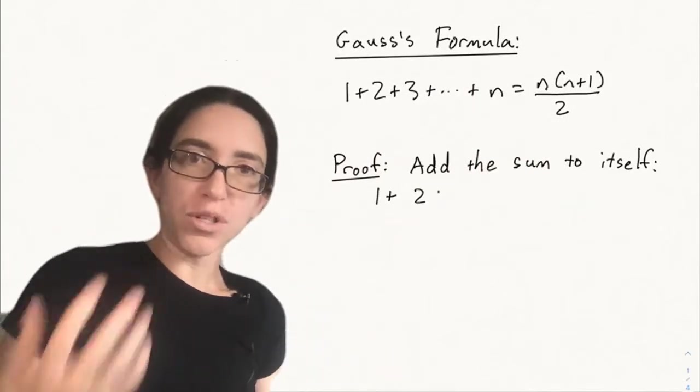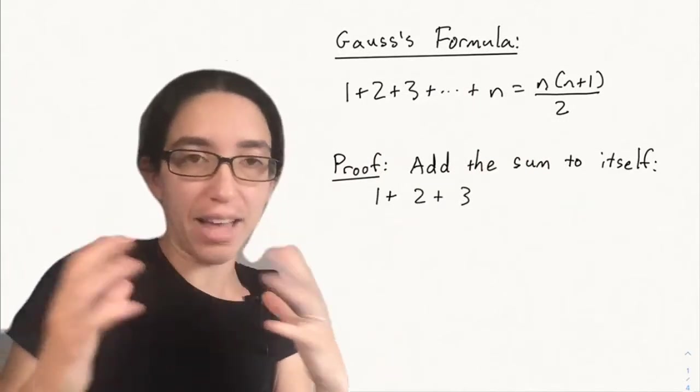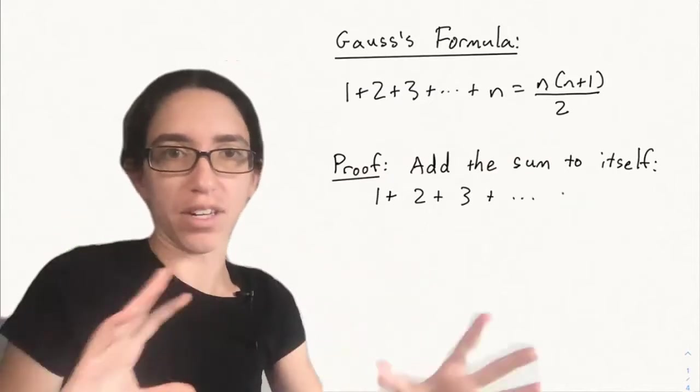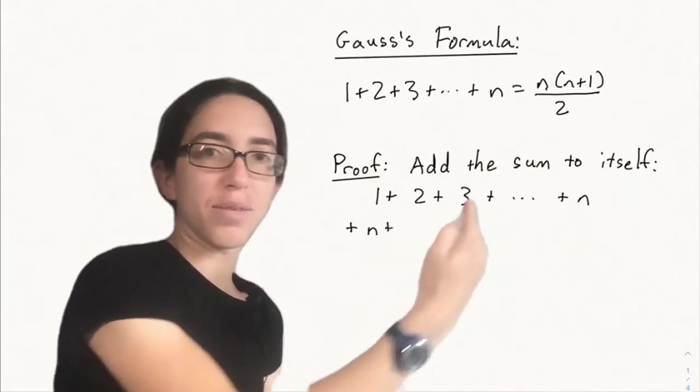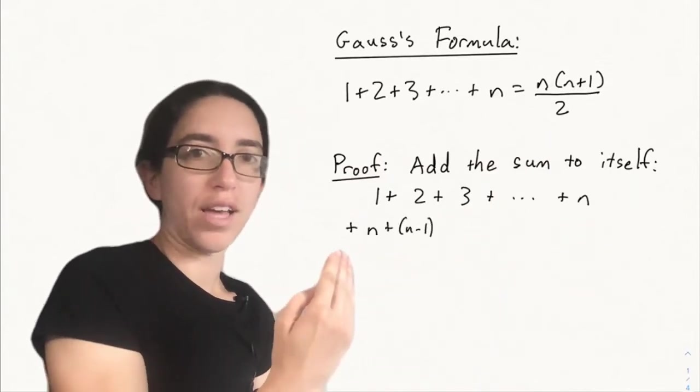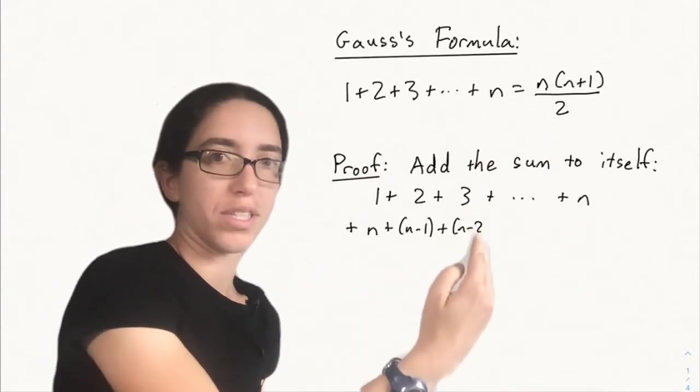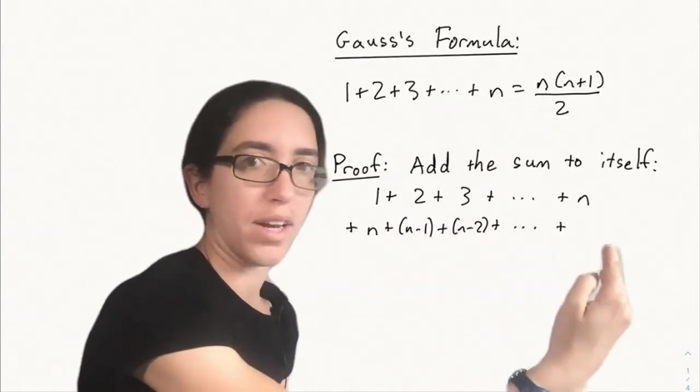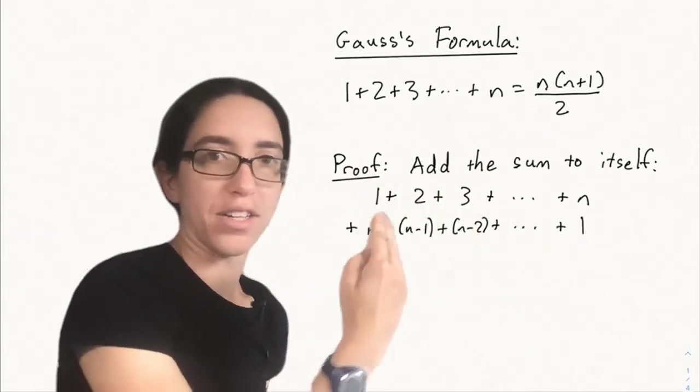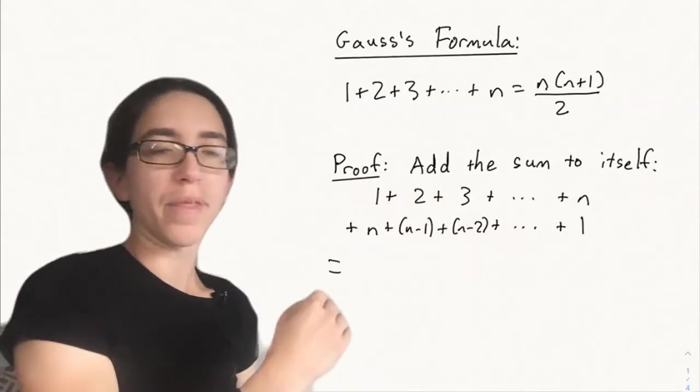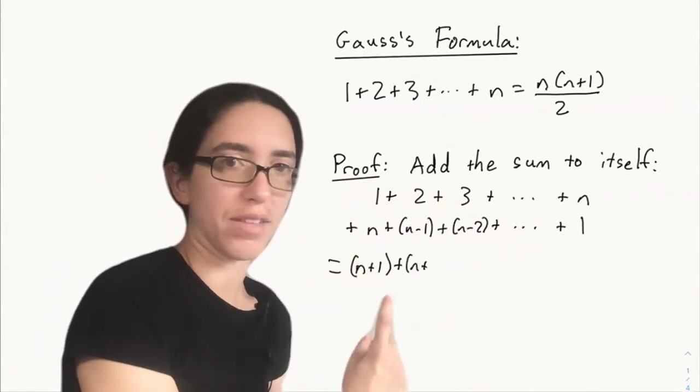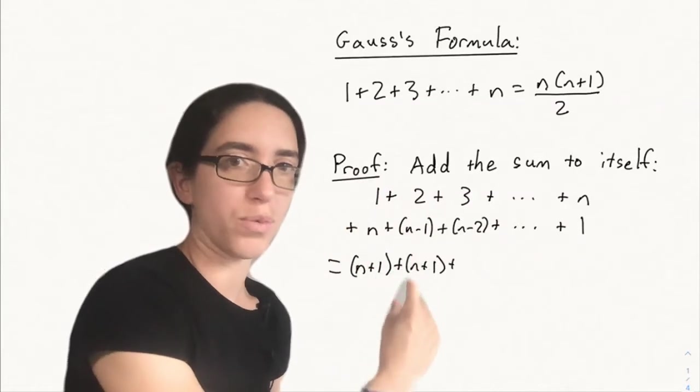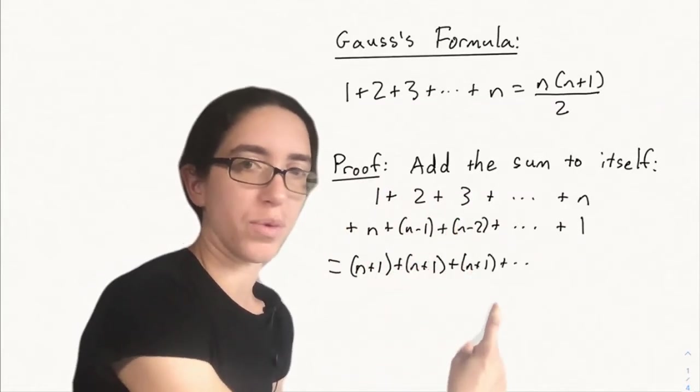And the way to prove this in general is to add the sum to itself. This avoids the even and odd case issue. So if you take the numbers one to n, and you add the sum to itself backwards, n plus n minus one plus n minus two down to one, added to the original sum one through n, then if you add the columns organized this way, one plus n gives you n plus one, two plus n minus one also gives you n plus one, three plus n minus two is n plus one. You keep getting n plus one.